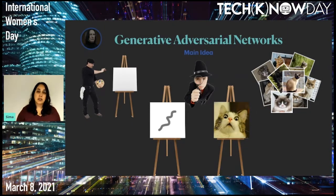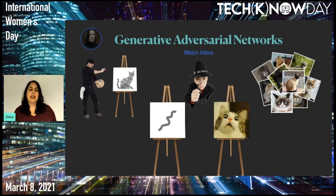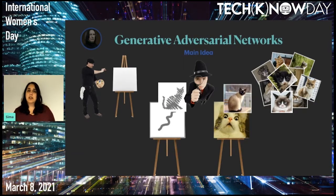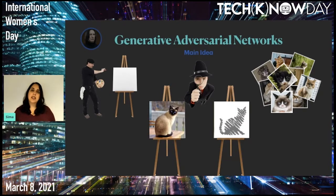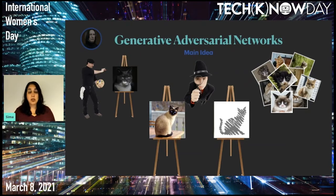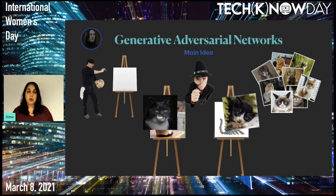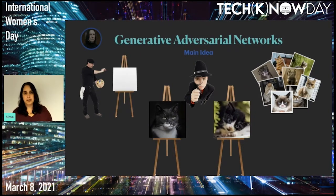In the beginning, the artist doesn't really know how to draw a cat, so it's pretty easy for the discriminator to decide what is a real image. This requires the generator to learn and train until it produces something that looks like a cat. Now the discriminator has to work harder to decide, but once it learns, it raises the bar again for the generator. This goes on until the generator becomes so good that the discriminator can no longer tell the difference.